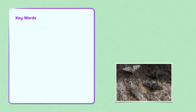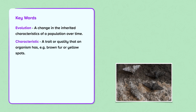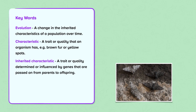Key words. Evolution: a change in the inherited characteristics of a population over time. Characteristic: a trait or quality that an organism has, e.g. brown fur or yellow spots. Inherited characteristic: a trait or quality determined or influenced by genes that are passed on from parents to offspring. Population: a group of the same species.